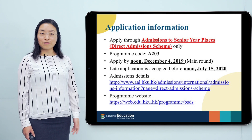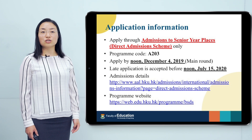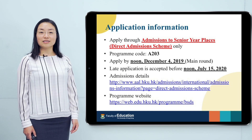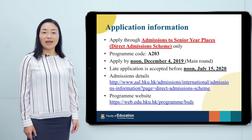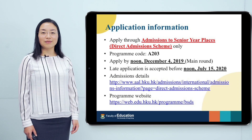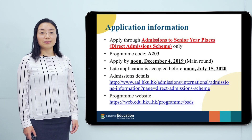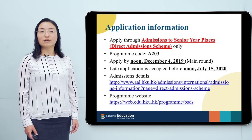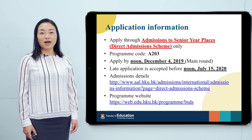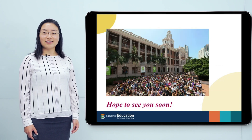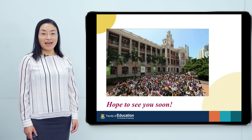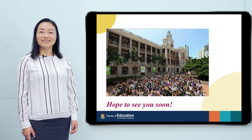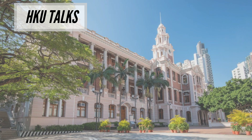Here is the information for application. Please apply through admissions to senior year places. Our program code is A203. The main round deadline is December 4th, 2019, at noon. Later applications will still be accepted until noon, July 15, 2020. Below are links to learn more about our program. We welcome you to contact us with any questions. We encourage you to apply and hope to see you in the interviews and in our program in September 2020. Thank you.